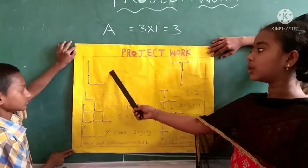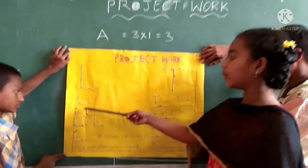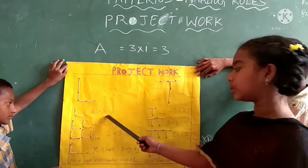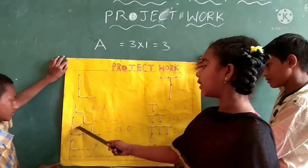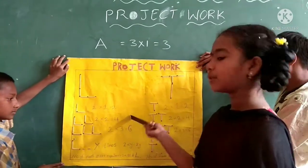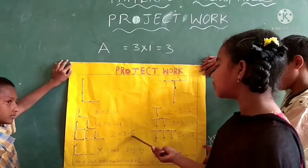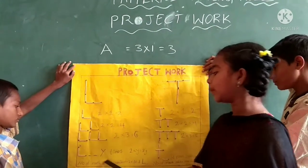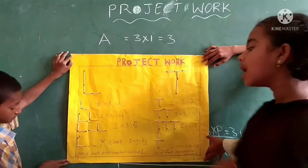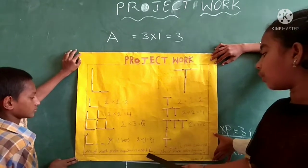The rule for making L is equal to 2Y. If we make 1 L, that is 2 into 1, equal to 2 matchsticks. If we make 2 L, that is 2 into 2, equal to 4 matchsticks. If we make 3 L, that is 2 into 3, equal to 6 matchsticks. So L times Y equals 2Y — the number of matchsticks required is equal to 2 into the number of L.